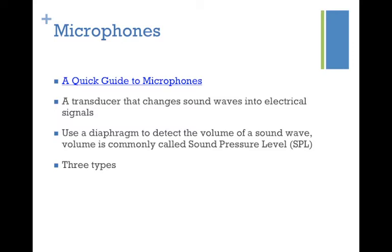When we talk about microphones, we also measure volume in what's called sound pressure level. That goes back to our first day where we talked about how sound transmits through a medium. When going through air, sound manifests as energy transferred through air molecules, which discretely changes the sound pressure level in the air. There are three types of microphones.